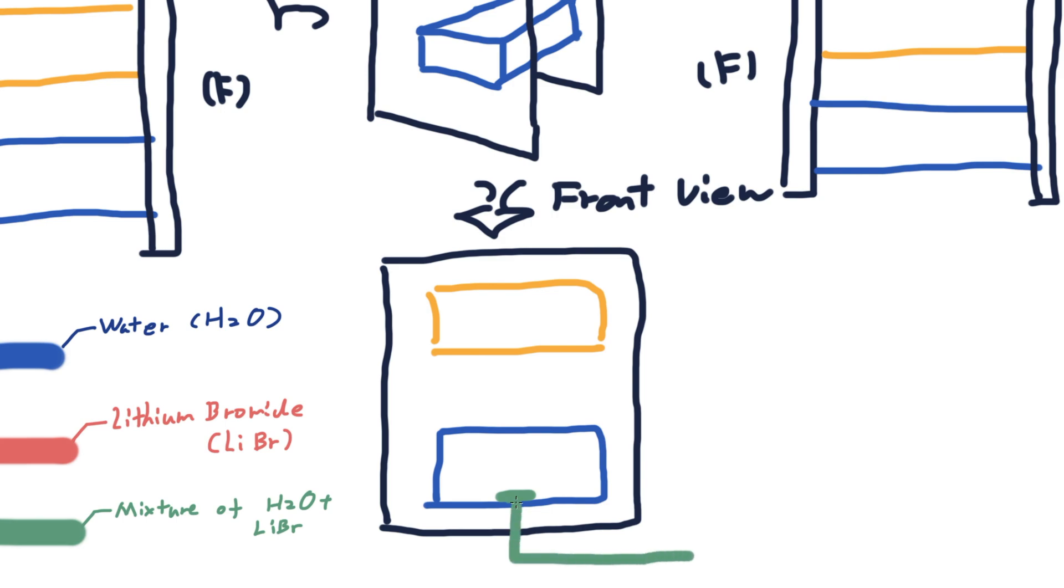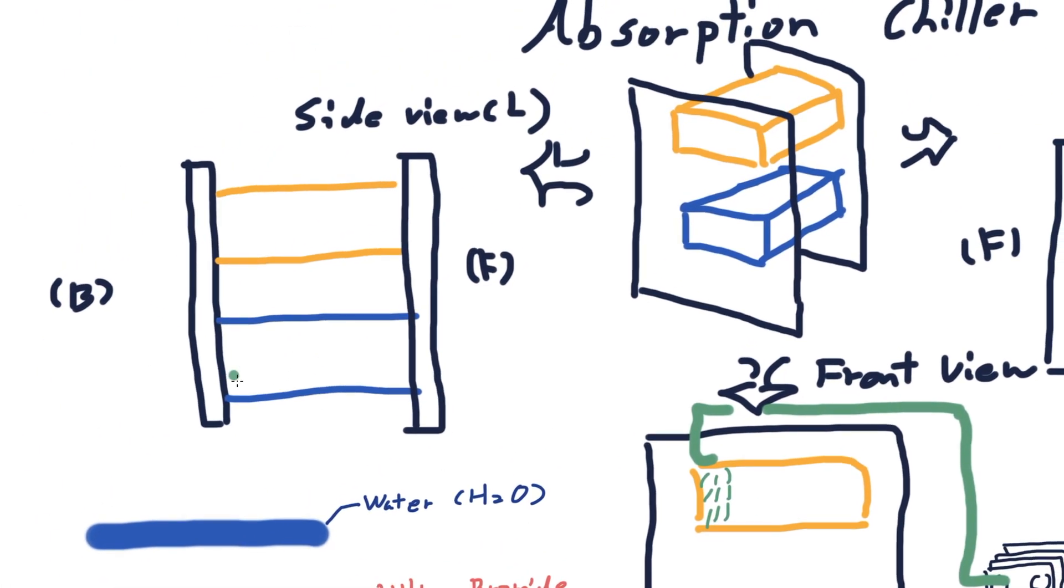The process starts as the collected mixture at the lower unit passes through a plate heat exchanger to be preheated, and then enters the upper unit, and then is sprayed in the upper unit chamber. We can also see this process in the left side view perspective.